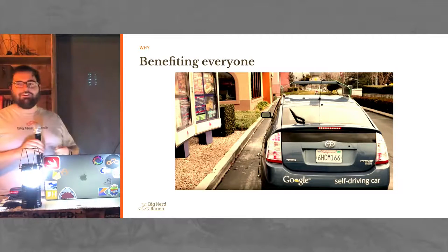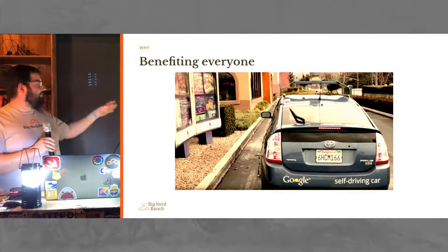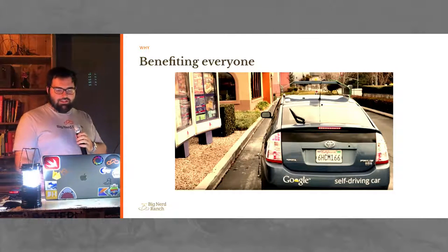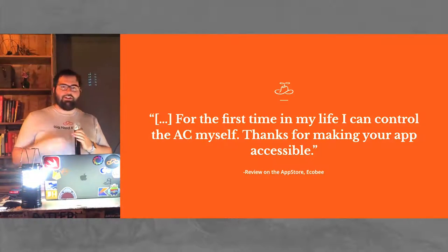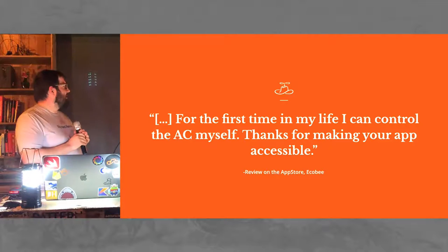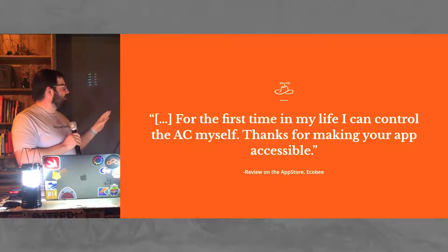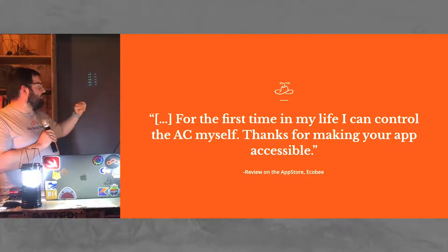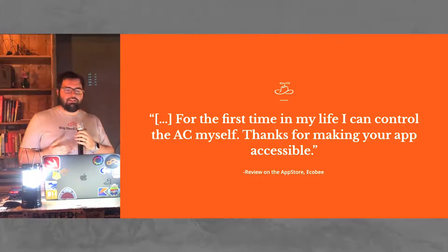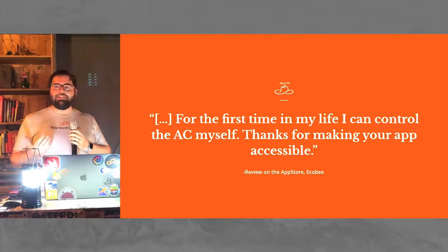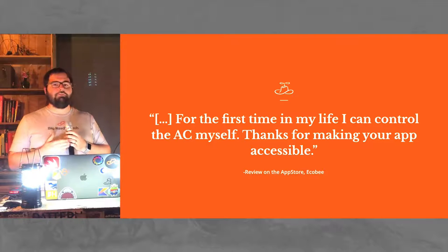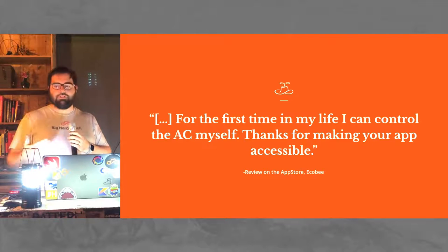Another example: I don't know if anyone uses an Ecobee or Nest. Ecobees are fantastic — they're accessible. This is one of the app reviews from the App Store: 'For the first time in my life, I can control my AC.' Something we don't really think about as visual people. As things get more sleek and buttons go away, it actually removes a lot of independence from people if we don't think about them when we're building our products.